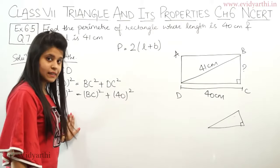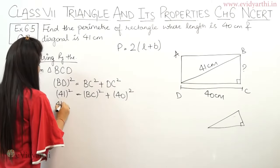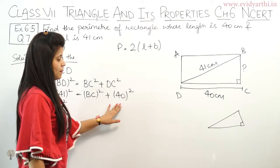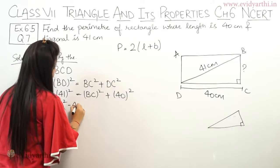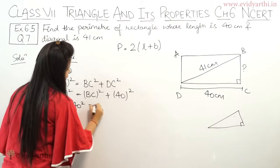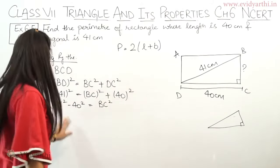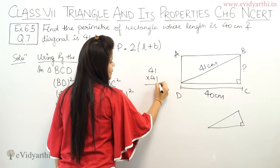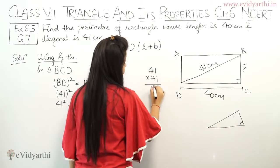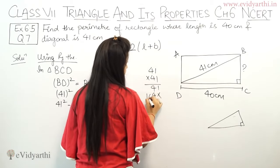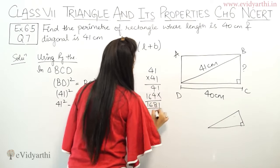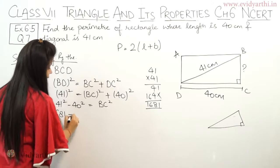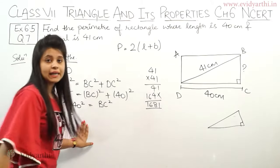So here we need BC. This is 41² minus 40² equals BC². So 41², find it as 41 into 41. This will be 1, 1 times 4 is 4, 4 times 4 is 16, so 1681.